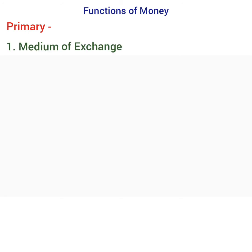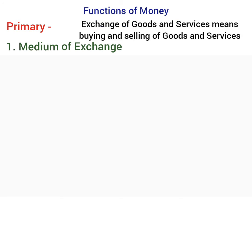The first primary function is Medium of Exchange. This is the most important function of money. Money is an instrument which acts as a medium of exchange for goods and services. In the absence of money, under the barter system, goods were exchanged for goods, which required double coincidence of wants, making exchange difficult and therefore limited.